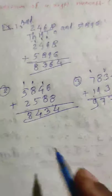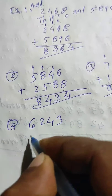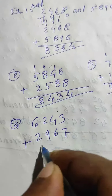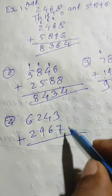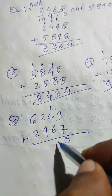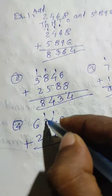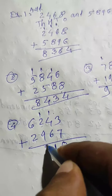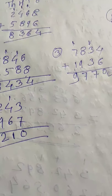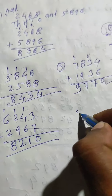After that let's see the fourth example: six thousand two hundred forty three plus two thousand nine hundred sixty seven. Three plus seven is ten, carry one. Four plus one is five, plus six is eleven, carry one. Then one plus two is three, three plus nine is twelve, carry one. Six plus two is eight - answer is eight thousand two hundred ten.